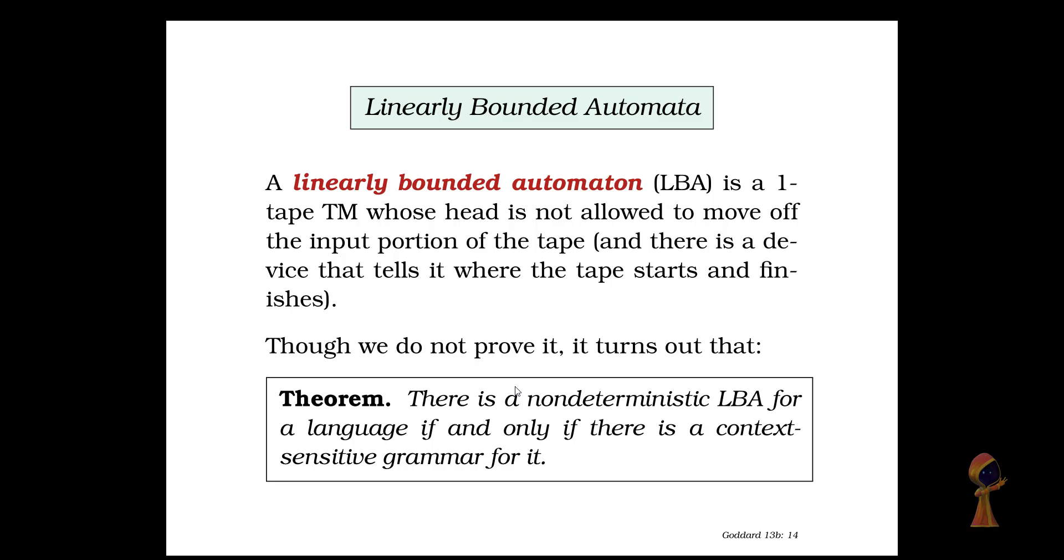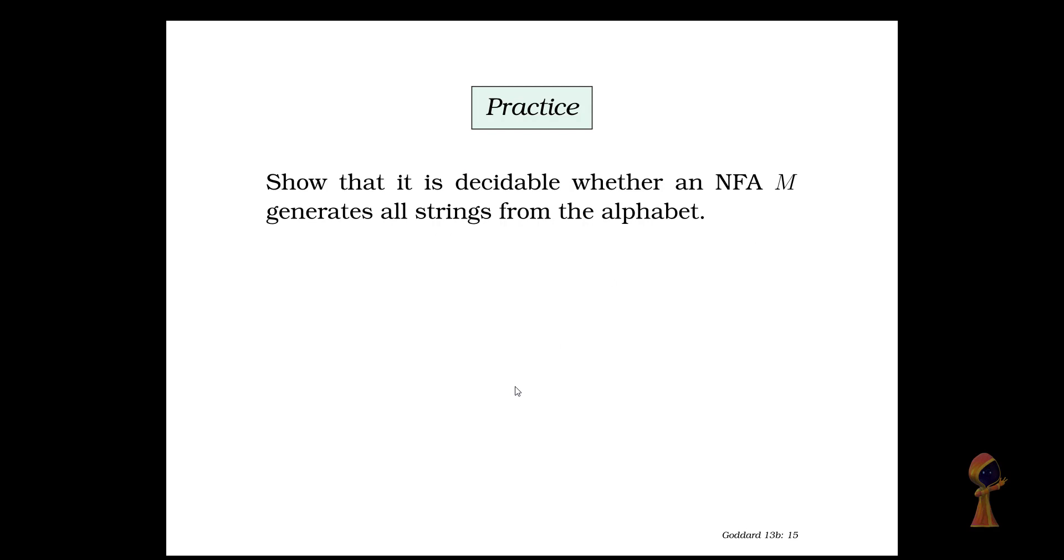There are other models of computation. For example an LBA which is a linearly bounded automaton. LBA is a one tape Turing machine where the head is not allowed to move off the input portion of the machine. There is also a device which tells where the tape starts and finishes. There is a theorem: there is a non-deterministic LBA for a language if and only if there is a context sensitive grammar for it.